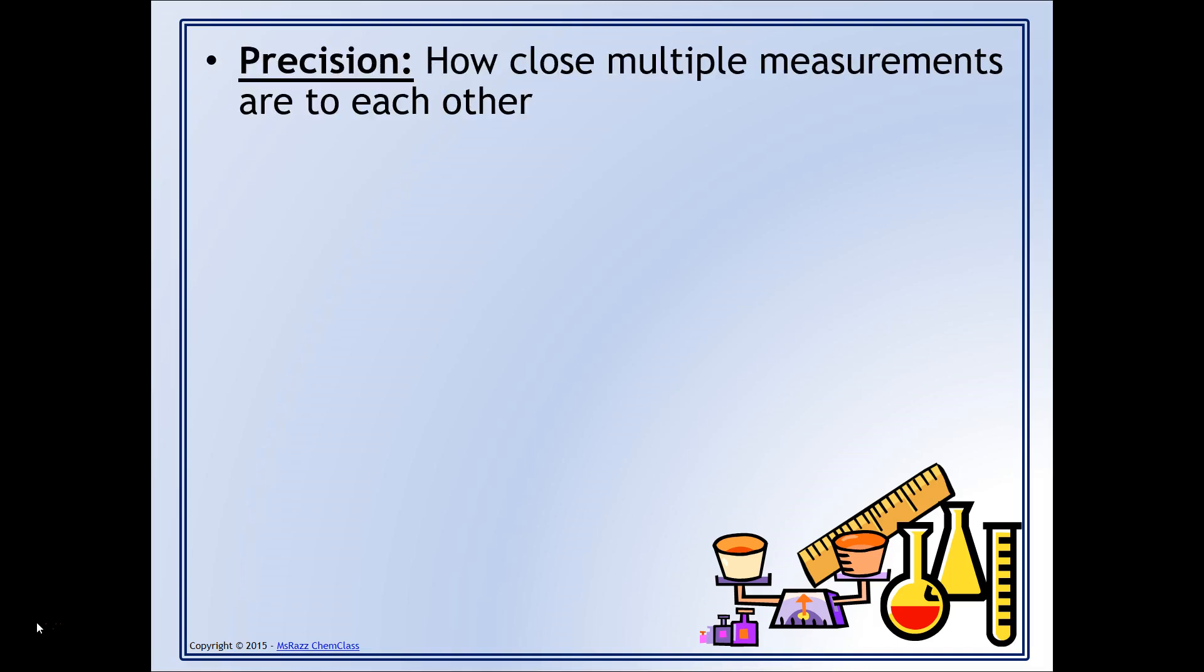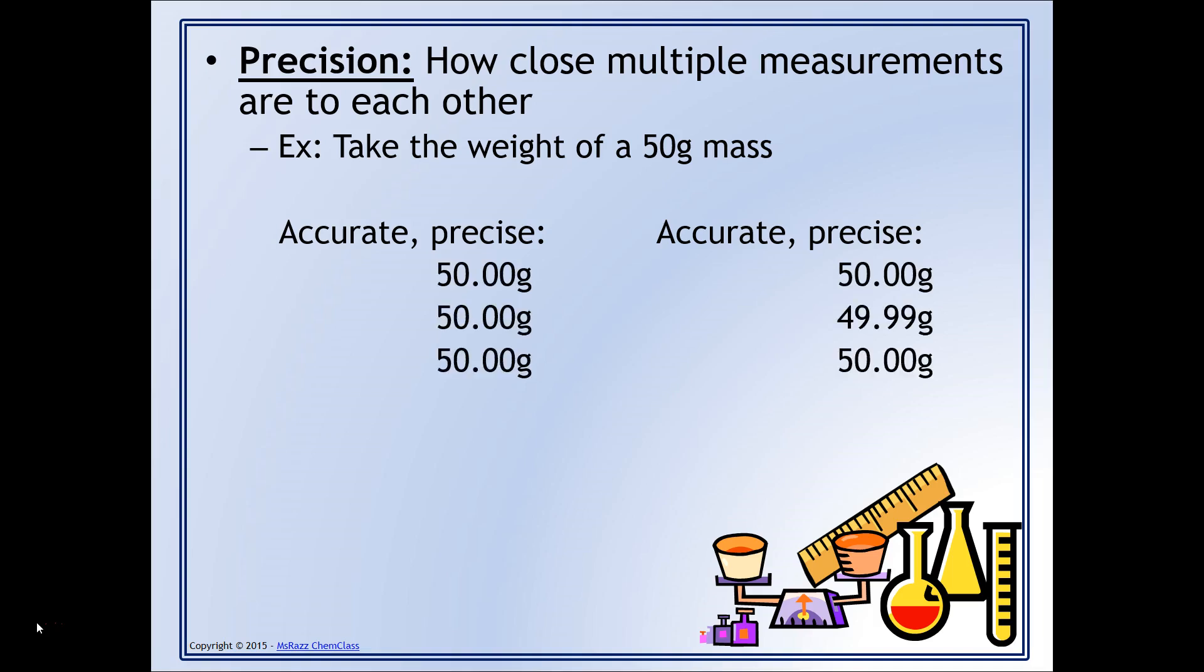Precision is how close multiple measurements are to each other. For example, if you take the weight of a 50 gram mass, you would have the following data. Both of these data represent both accurate and precise data. The reason why they're accurate is because the mass should have a mass of 50 grams. They're also precise because you can see we got the same measurement multiple times.